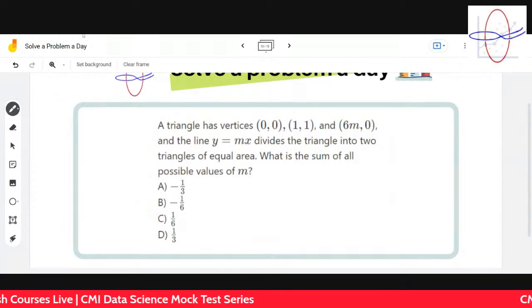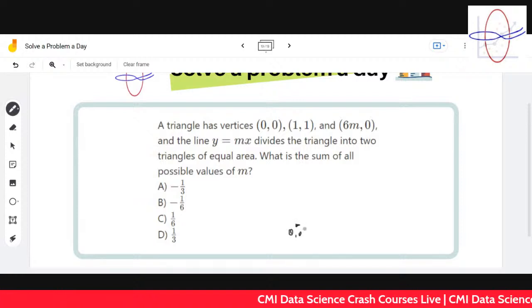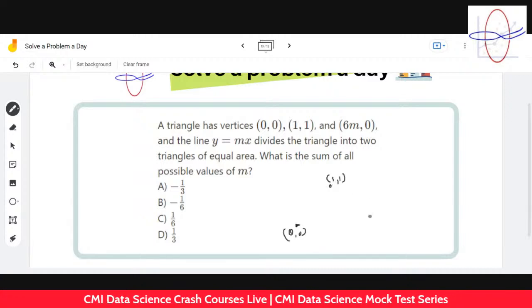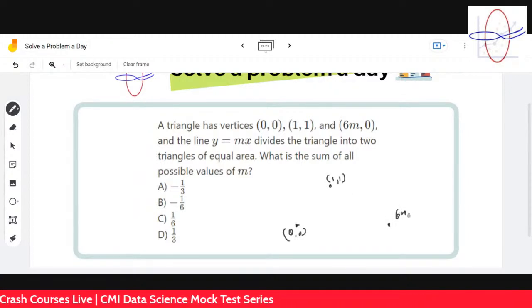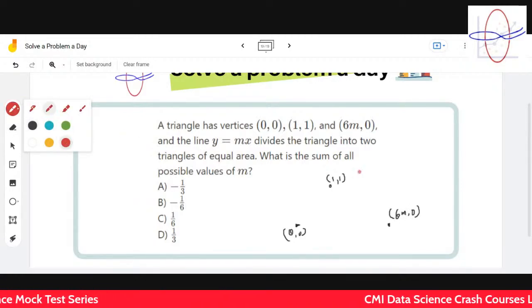Here are the triangle's vertices: three vertices (0, 0), (1, 1), and (6m, 0). The m depends on positive or negative, but it's on the x-axis. Let's take it positive for the moment. We have the line y = mx such that it divides the triangle into two.